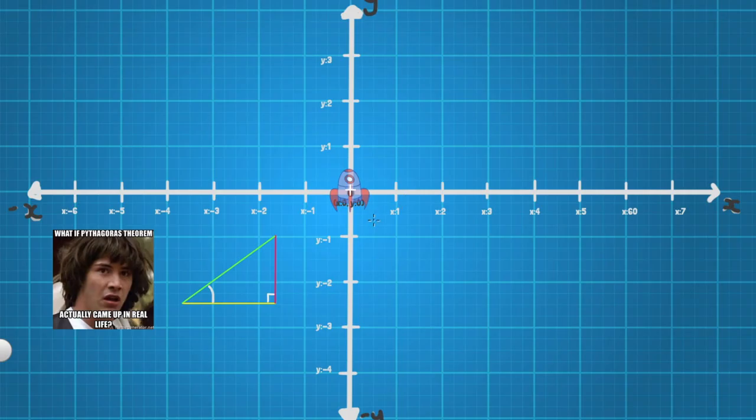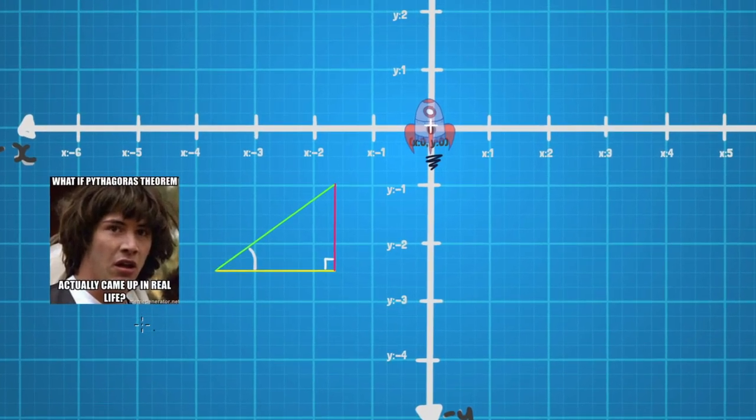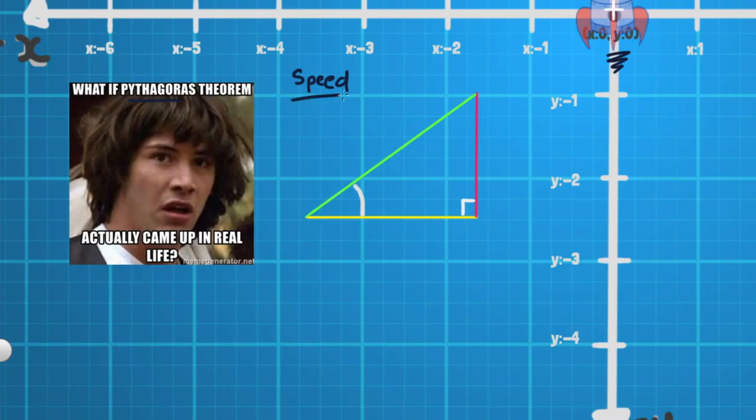Here we are over in Sketchbook. I've got our little rocket ship here in the center. We've got the X going across and the Y going up and down. And over here, we're going to be exploring Pythagoras' theorem. What if it actually came up in real life? We're going to be using Pythagoras' theorem in our game. So games are technically not real life, but they occur in real life. So I'm claiming real life. We're going to be using Pythagoras' theorem to understand speed.